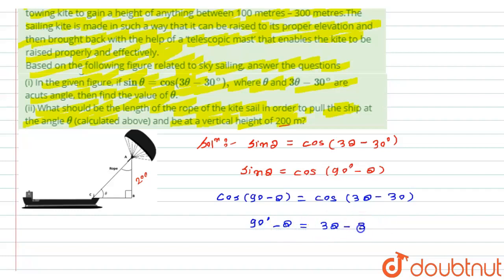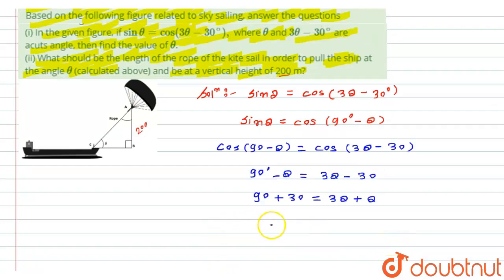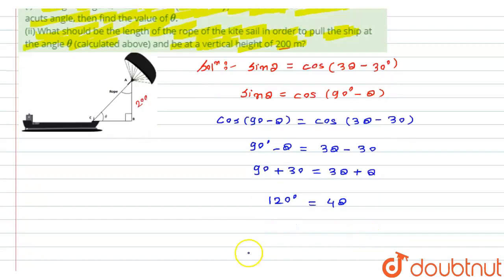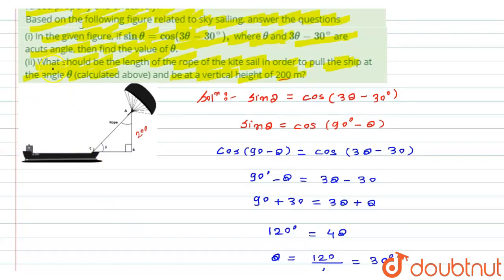So I will get 90° - θ = 3θ - 30°. Taking 30 to the other side, the expression becomes 90° + 30° = 3θ + θ. This becomes 120° = 4θ. From here, θ = 120° ÷ 4, which equals 30°.